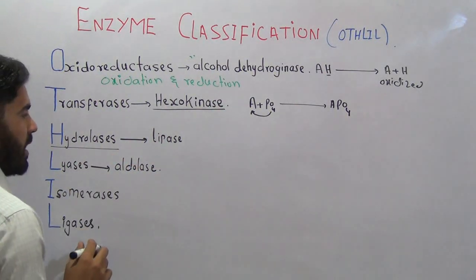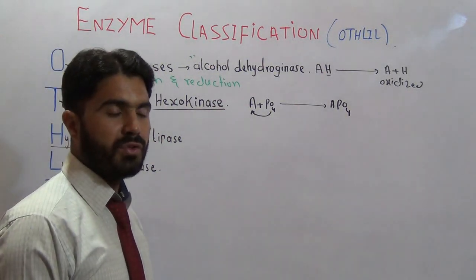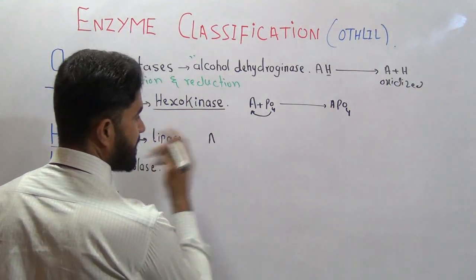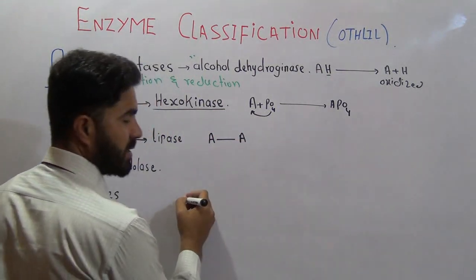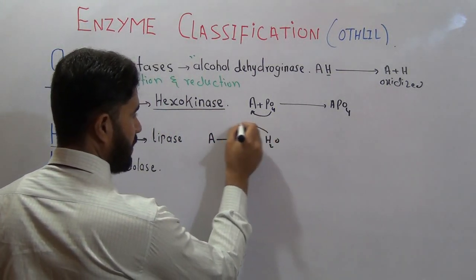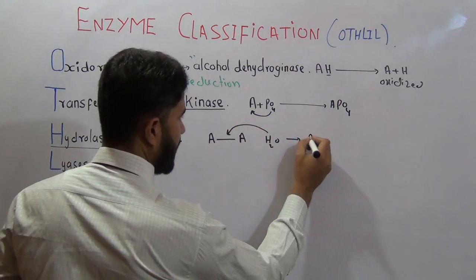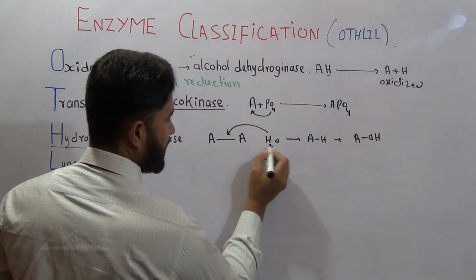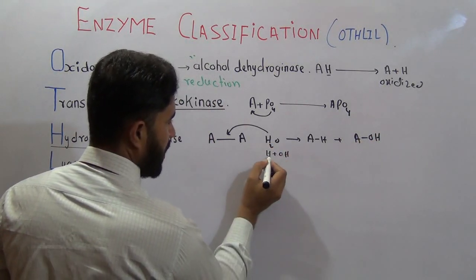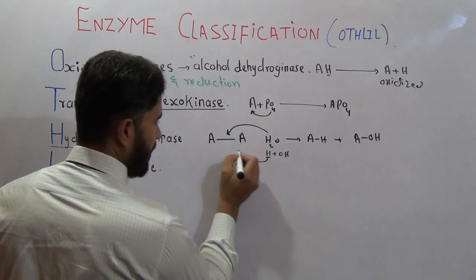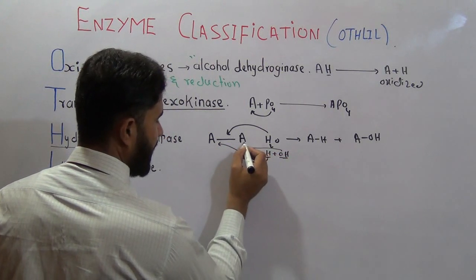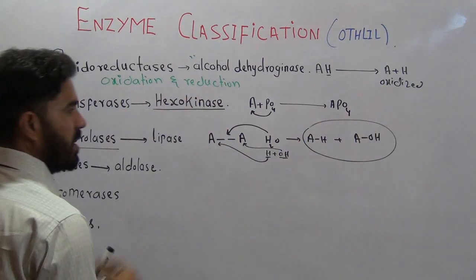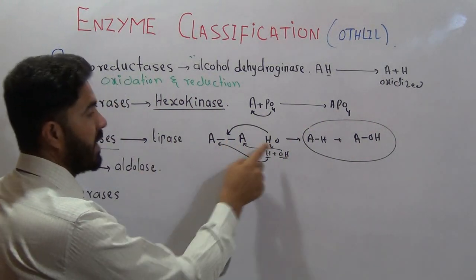Hydrolases are the third category. These are enzymes which break down a compound with the help of water. For example, if we have one amino acid attached to another, using water (H₂O) we can break this bond. The H from water attaches to one side and the OH attaches to the other side, breaking the bond. This process is called hydrolysis because the bond is broken with the help of water.